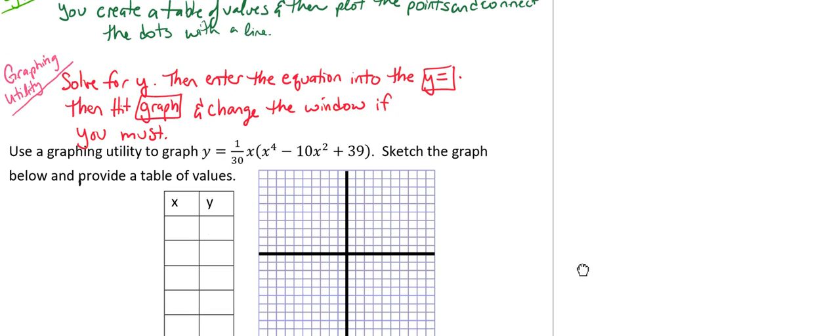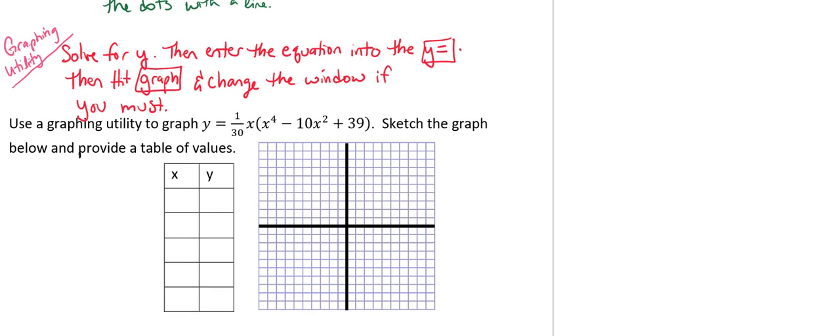So in our example here, we're going to be using a graphing utility to graph y equals 1 over 30 times x times the quantity x to the 4th minus 10x squared plus 39. So it wants us to sketch the graph below, but to also provide a table of values.